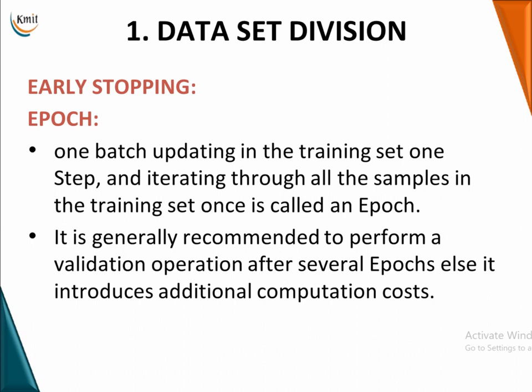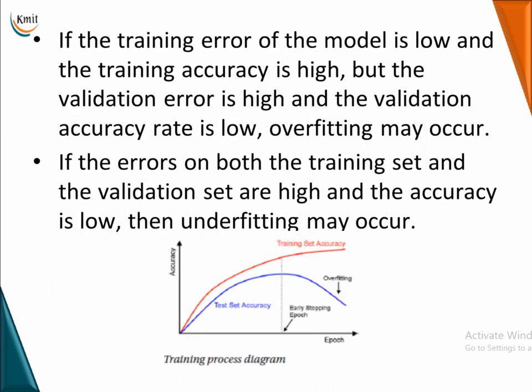Next, we are going to see early stopping and epochs. One batch of updating, followed by iterating through all the samples in the training set, is called an epoch. It is generally recommended to perform a validation operation after several epochs; otherwise, it is going to introduce additional computation cost.